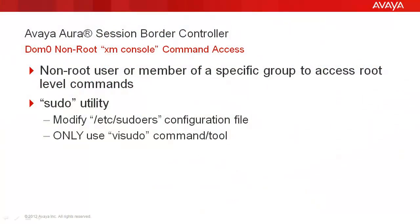There may be a need to allow non-root users or members of a group in a Linux system to access commands typically requiring root privileges. This may be accomplished using the sudo utility, which allows users to execute commands using the privileges of another user. Specific access is configured by modifying the /etc/sudoers file using the visudo command. Root level permissions are required to perform this task.